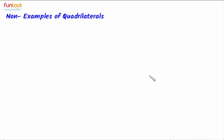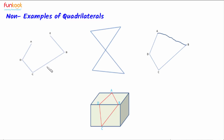Now let's discuss some non-examples of quadrilaterals. The first is not a quadrilateral because it is not a closed figure — there is no closed space bounded by four straight lines. In the second example, AB is not a straight line, so it is not a quadrilateral. In the third example, all four sides do not lie in the same plane, so it is not a quadrilateral.